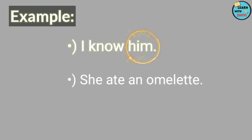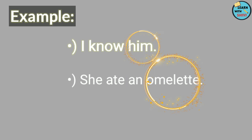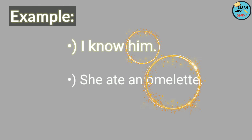Similarly, in the second sentence: 'She ate an omelette.' What is our verb? The verb is 'ate'. And what did she eat? She ate an omelette. So what does 'an omelette' become over here? It becomes our object. I hope you are easily able to identify objects now.